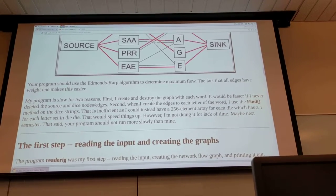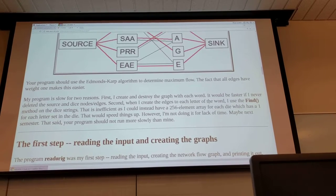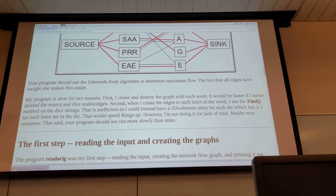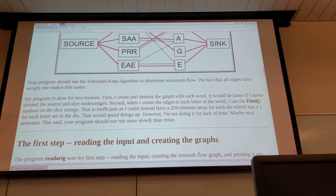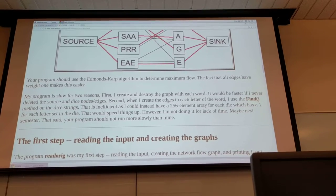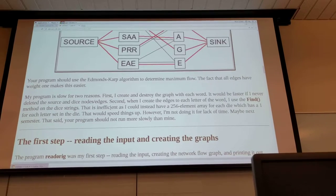Secondly, when he creates the edges for each letter the word uses the find method on the die strings. It is inefficient and it can be more efficient if you create a 26 element array where each die has a one for each letter the die has set and that would also speed things up.